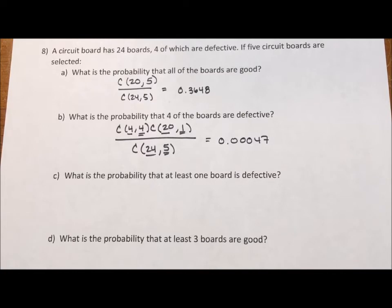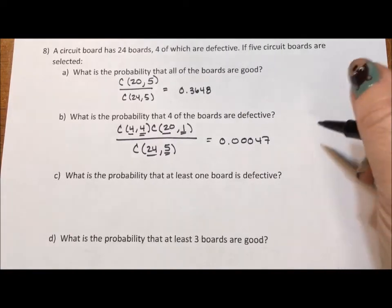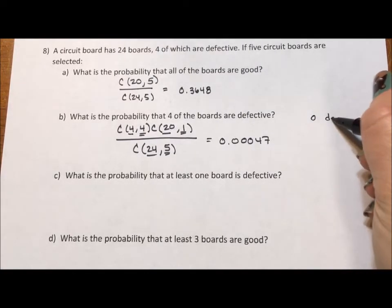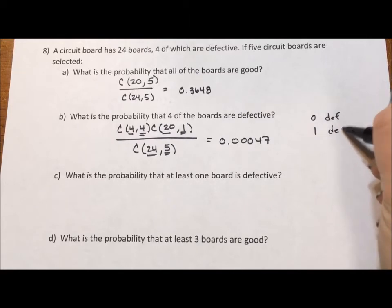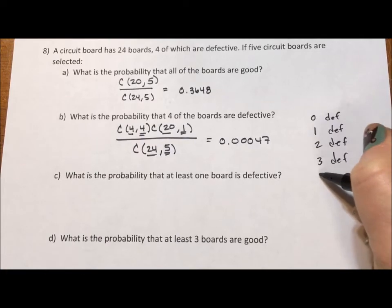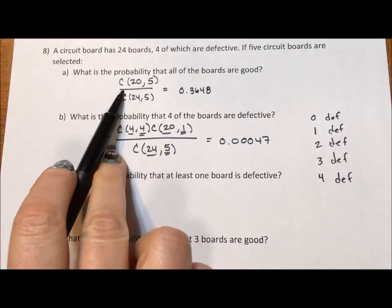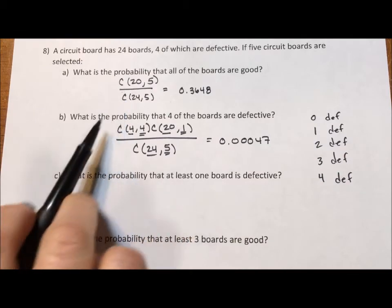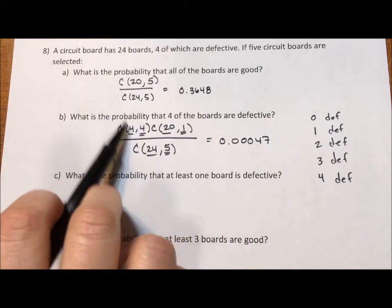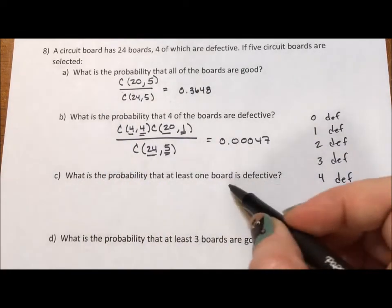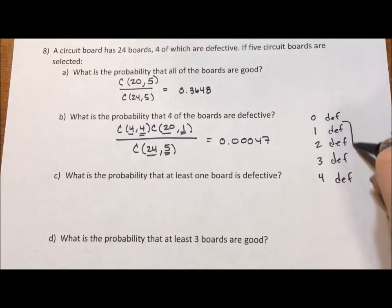What's the probability that at least one board is defective? So what we could have if we pulled these boards out is we could have 0 defective, we could have 1 defective, 2 defective, 3 defective, 4 defective. And each of these, this right here is 0 defective, they're all good. This right here is 4 defective.